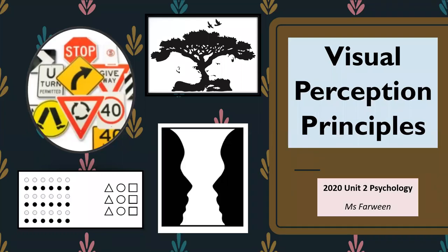The next topic is visual perception principles, an interesting topic that you can relate back to real life. Visual perception principles is basically the way that our eyes view things in the environment, and the particular concepts behind why certain things in our environment are viewed in a certain way. It's connected to how we make sense of our world and why we view certain things in a particular way.